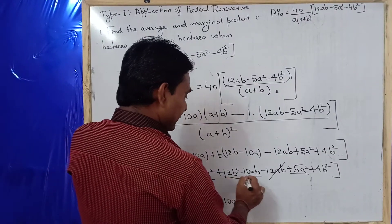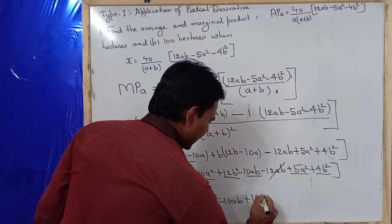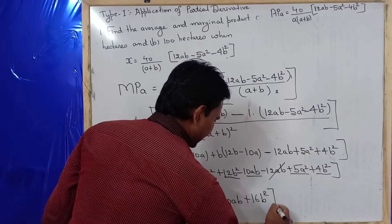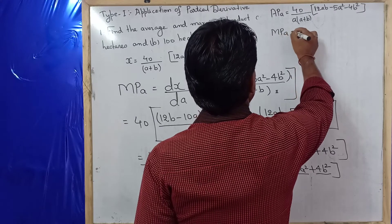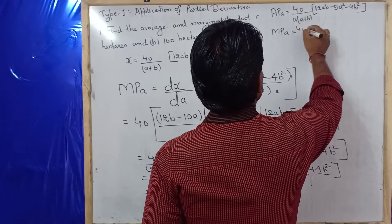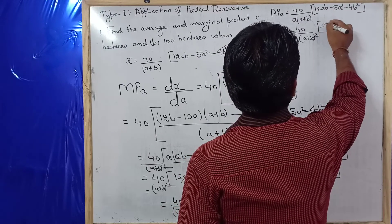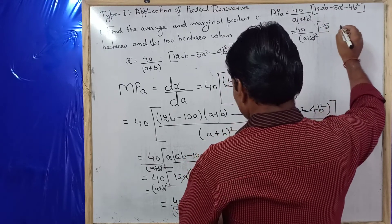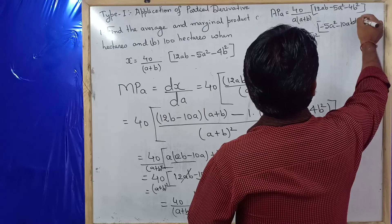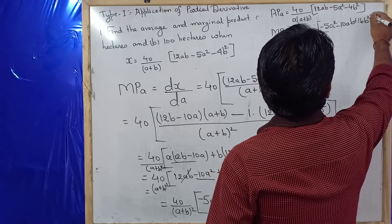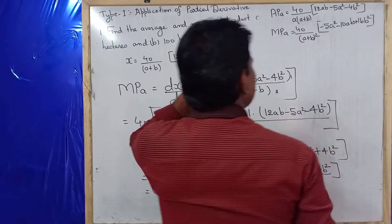So MPA equals 40 divided by (A+B) squared, times (minus 5A squared minus 10AB plus 16B squared). So we have now derived both APA and MPA — average product and marginal product. Now we will find their values one by one.